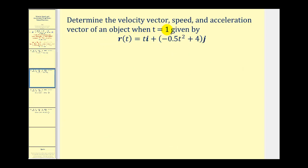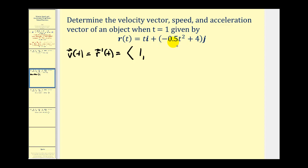If we want to determine the velocity vector, speed, and acceleration vector of an object when t is equal to one, we first need to determine the velocity vector-valued function and the acceleration vector-valued function. The velocity vector-valued function will be equal to the derivative of the given position vector-valued function. Taking the derivative of each component: the derivative of t is one, and the derivative of negative 0.5t² + 4, multiplying by two, gives us negative t for the y component.